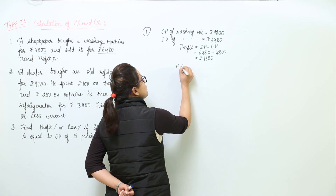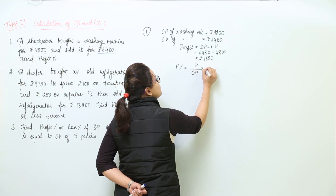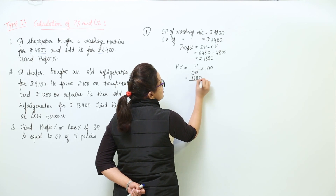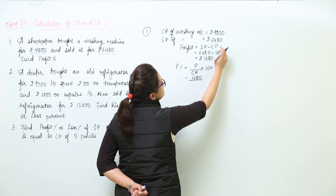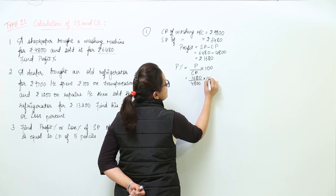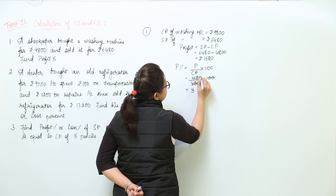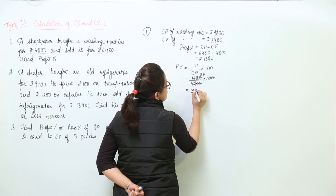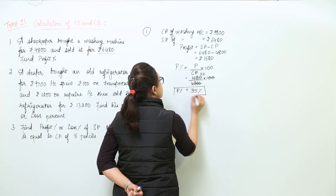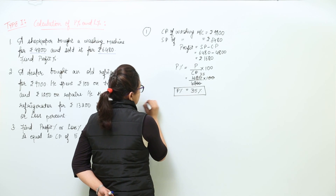We were asked to find the profit percent. The formula is: profit percent = (profit / CP) × 100. That is 1680 divided by 4800, multiplied by 100, which gives us 35% as the profit percent in this transaction.